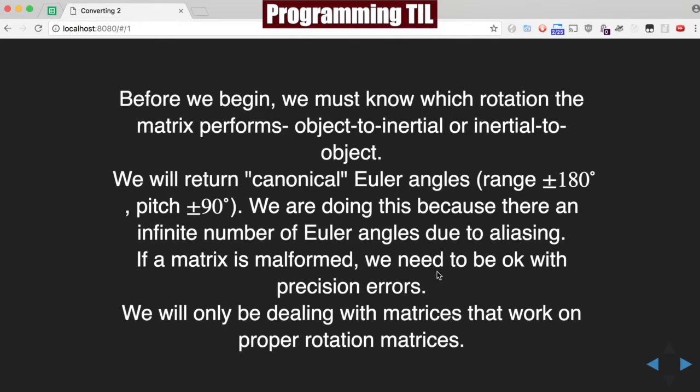And if you recall, Euler angles can have an infinite number due to aliasing. If a matrix is malformed, we may need to be okay with precision errors. And we will be dealing with matrices that work on proper rotation matrices.